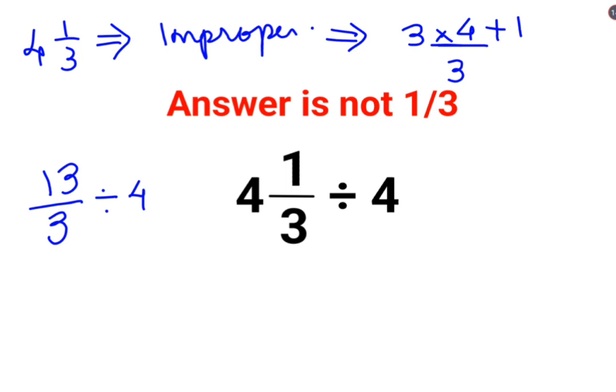Now, whenever you have division, you need to follow the rule of KCF, where K stands for keeping the first number as it is, C stands for changing the division sign to multiplication, and F stands for flipping or taking the reciprocal of 4, which is 1/4.